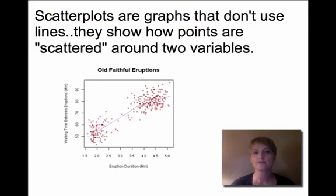For example, this graph here shows Old Faithful eruptions. Down at the bottom on the x-axis you'll see it has how long the eruption lasted. On the left-hand side on the y-axis you'll see it shows the wait time between the eruptions. So this graph is trying to relate the eruption duration to the wait time between eruptions.